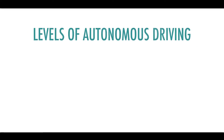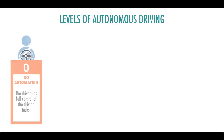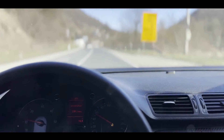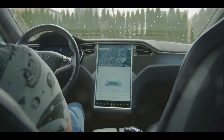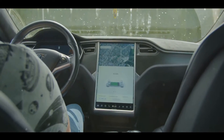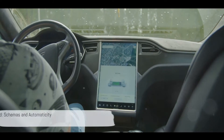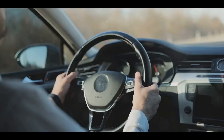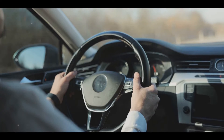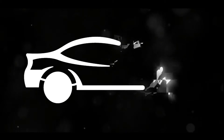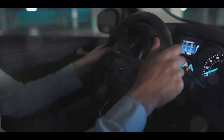The third core concept is automaticity — the ability to do things without occupying the mind with low-level details, usually the result of learning, repetition, and practice. Remember when you first learned to drive? Each action required conscious thought. But with practice, driving becomes automatic. Schemas and automaticity work together to reduce cognitive load: as we develop more complex schemas through learning and practice, we become more automatic in our responses, freeing up cognitive resources to tackle new or more complex tasks. It's a bit like upgrading the RAM in your computer to handle more demanding applications.